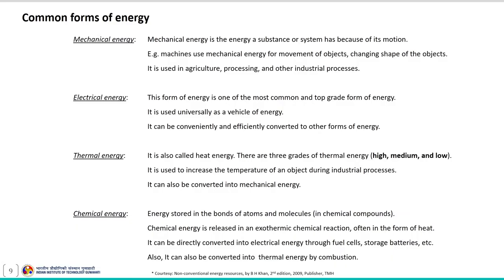Now let us discuss about the common forms of energy, which include mechanical energy, thermal energy, electrical energy, and chemical energy. Mechanical energy is the energy a substance or system has because of its motion. Machines use mechanical energy for movement and changing the shape of objects; it is also used in agriculture, processing, and other industrial processes.